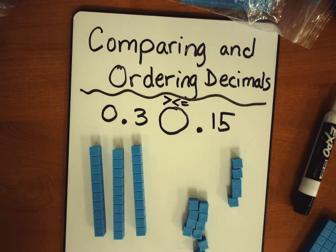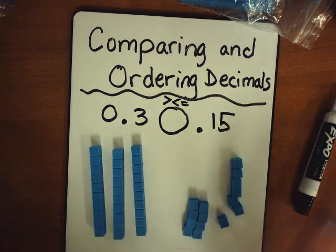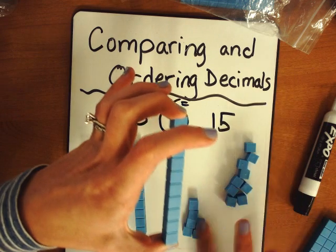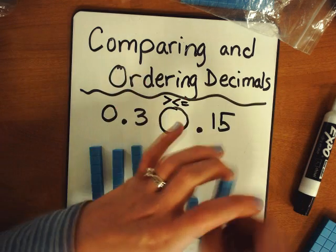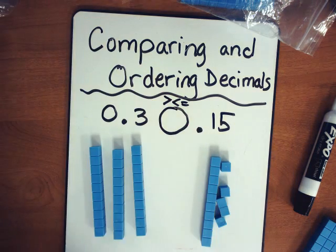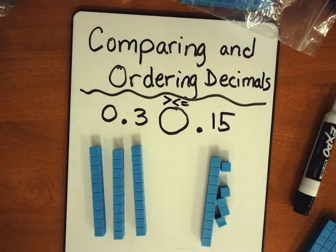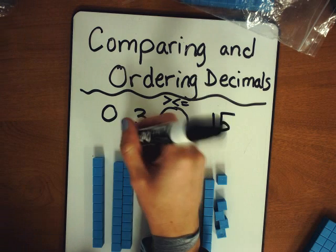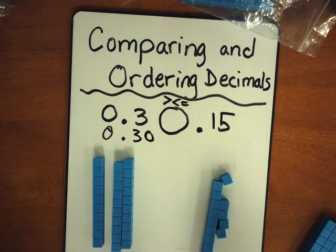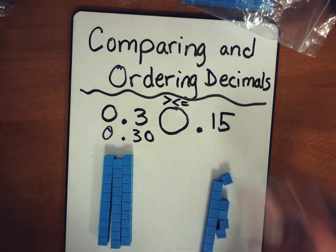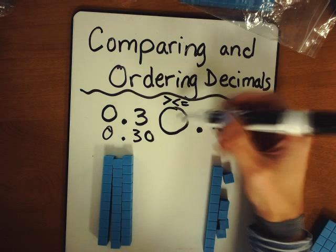That's right. So we've got fifteen hundredths right there. Thinking about exchanging ten of those for a long right there. And now it's crystal clear. If I were to break this up, I have fifteen hundredths. How many hundredths do I have with those three tenths? Thirty hundredths. That's right. Go ahead and write this right underneath — it's the same as thirty hundredths. So we've got three tenths, or thirty hundredths, is more than, or greater than, our fifteen hundredths right there.